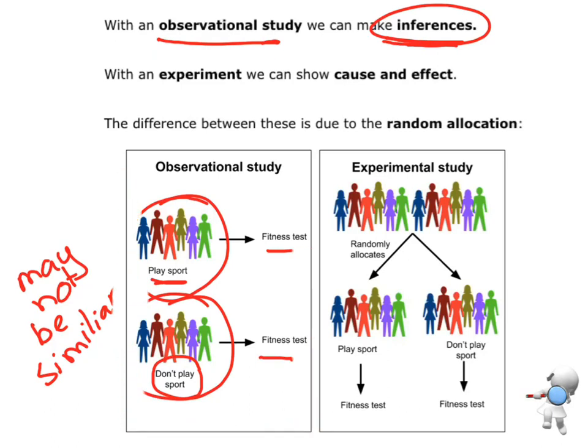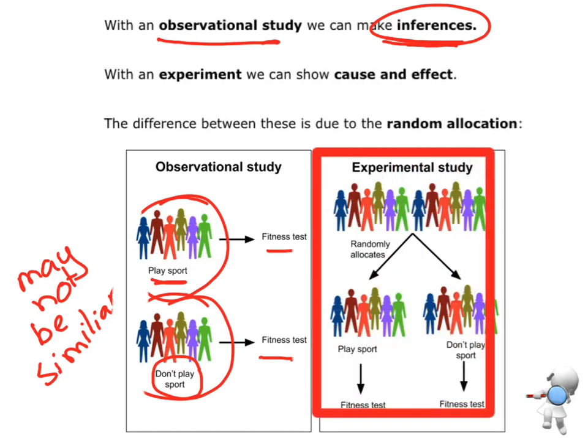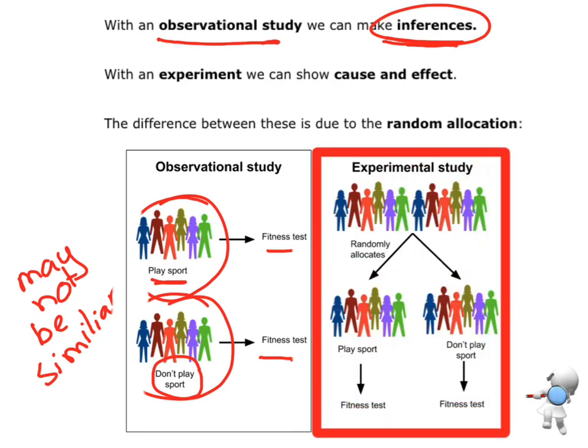And this is a different setup. So what it does is it starts with a whole group, one group of people at the beginning. So one group of people. And we randomly allocate them into these two different groups. They either go into the treatment group or the control group.